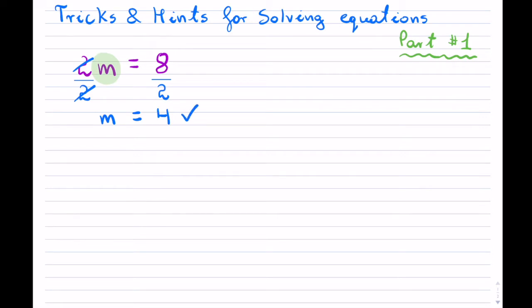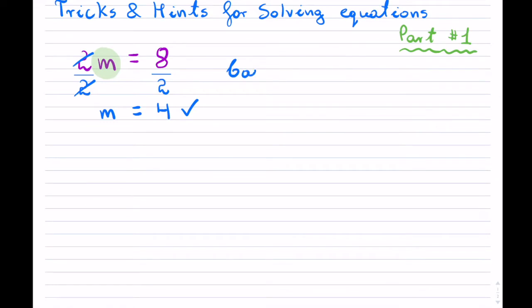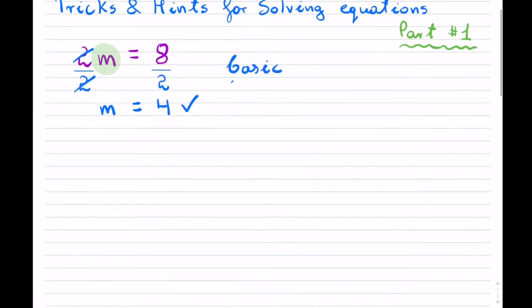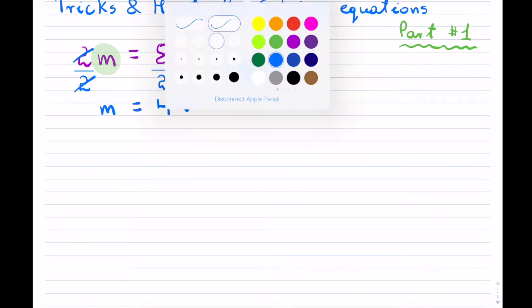8 divided by 2 is 4, and the equation is solved. That's the pure basics of trying to solve an equation. But if you change it ever so slightly, for whatever reason, it throws students off.